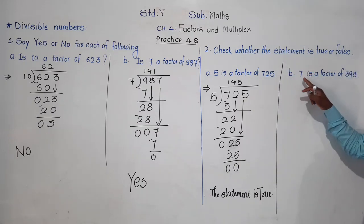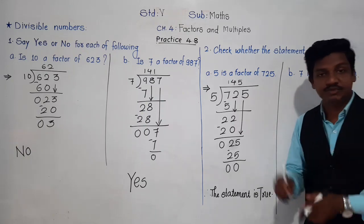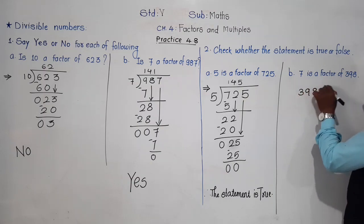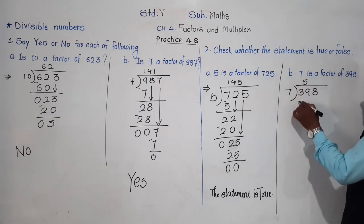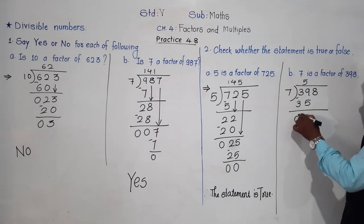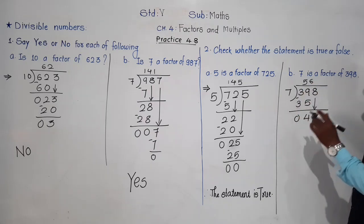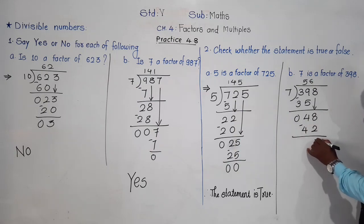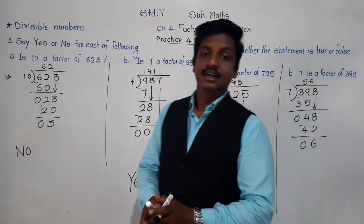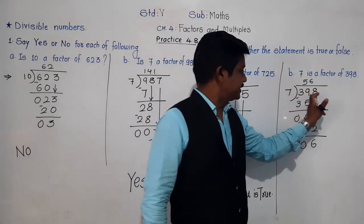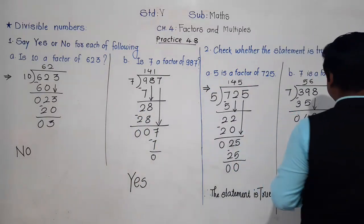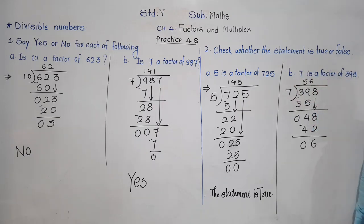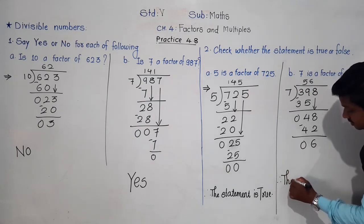Let's do the second one. The statement is: 7 is a factor of 398. We have to check whether this given statement is true or false. Let's check by dividing 398 by 7. 7 fives are 35, 9 minus 5 is 4, bring down 8 — we get 48. 7 sixes are 42, the remainder is 6, 4 minus 1 is 3. The remainder is not 0, it is 6. So according to the rule, if the remainder is not 0, that means 398 is not divisible by 7. Since it is not divisible by 7, 7 is not a factor of 398. The given statement is false.